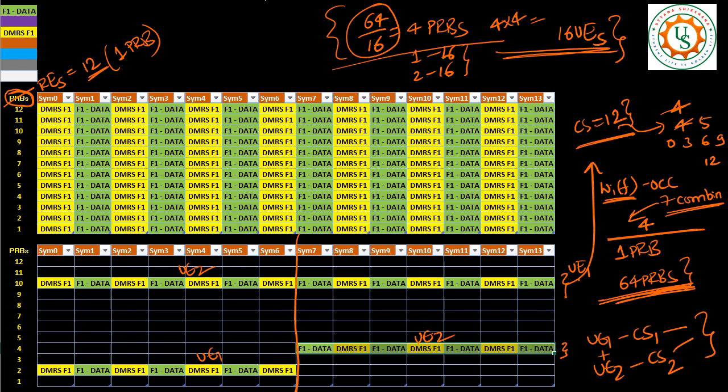Now, theoretically, how many UEs are possible that we can multiplex? Theoretically, we have 12 cyclic shifts. And for 14 symbols, we have 7 combinations for W_i. So total 12 x 7, 70 plus 14 is equal to 84. So total 84 UEs can be multiplexed on the same time frequency resource. This many UEs is theoretically possible.